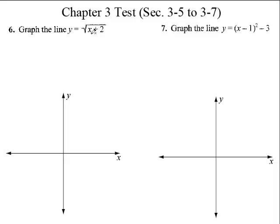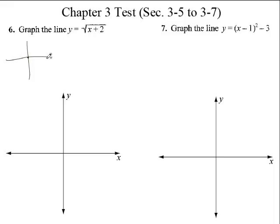Here's a couple more graphs. This is a square root. Do you remember what the parent function to a square root graph looks like? It looks like this. If it was just y equals the square root of x — you didn't have the plus 2 in here — put a 0 in for x, and the y would be 0 because the square root of 0 is 0.